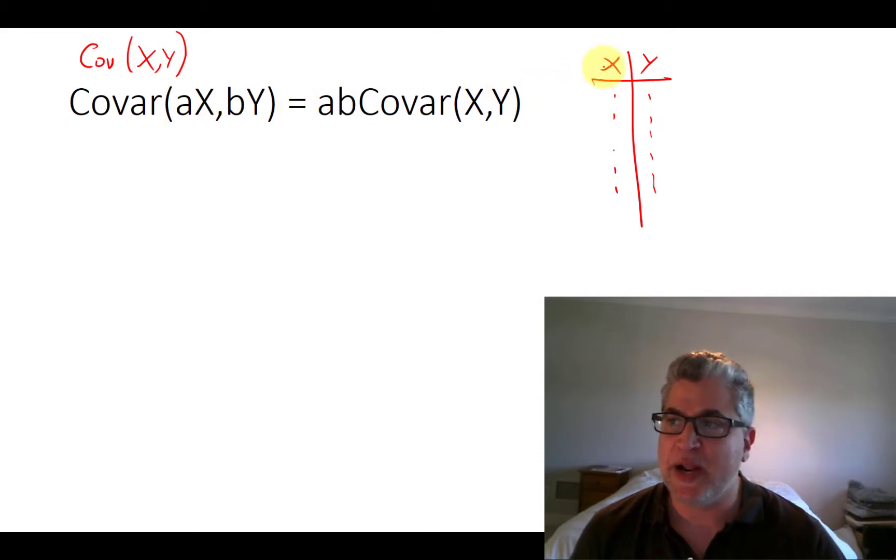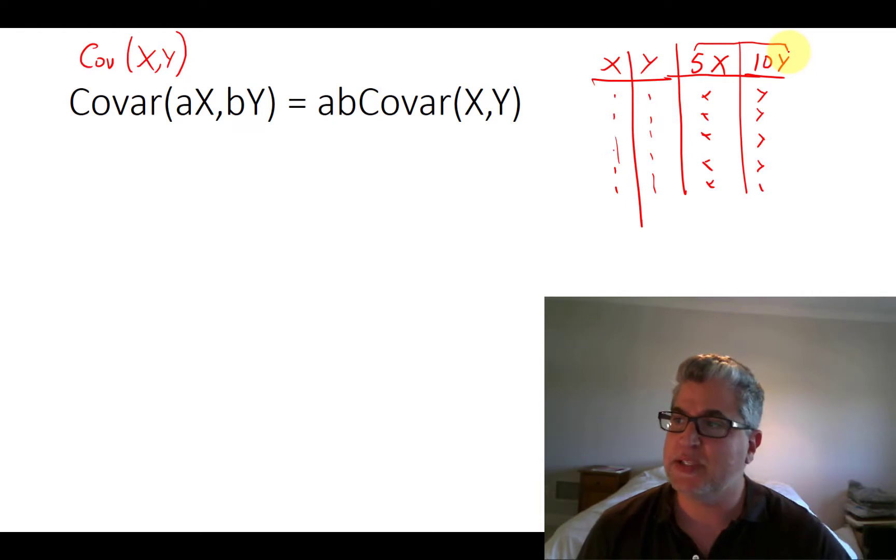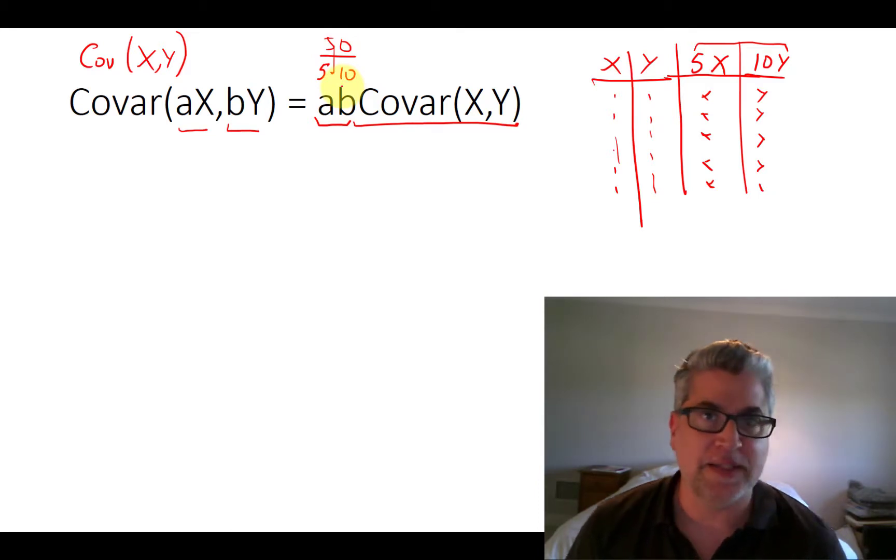Now that's all well and good, but then what happens if we do 5X and multiply all of our X values by 5 and all of our Y values by 10? We would get different numbers and we would have a different covariance. So the question we're asking now is, what is the covariance of transformed X and transformed Y? It is going to be related to the original covariance multiplied by the product of our scaling factors. In this case, it's going to be multiplied by 5 times 10 or 50. But let's see why that's the case.